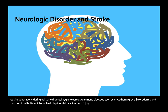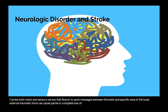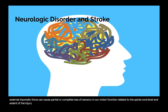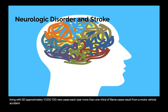The spinal cord extends down the middle of the back and carries both motor and sensory nerves that branch to send messages between the brain and specific areas of the body. External traumatic force can cause partial or complete loss of sensory and motor function related to the spinal cord level and extent of the injury. There are more than 288,000 people in the United States living with SCI, approximately 17,700 new cases each year. More than one-third of trauma cases result from a motor vehicle accident. Other causes are falls, diving accidents, violence, and combat injuries.